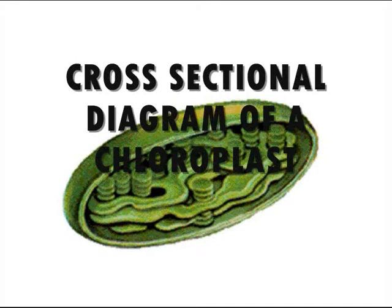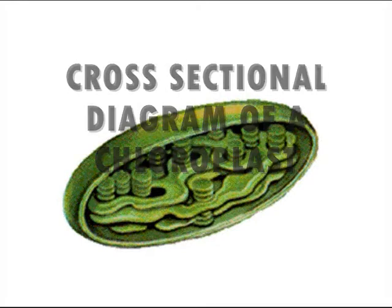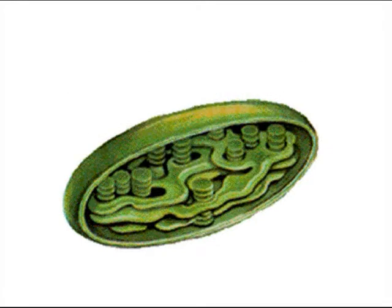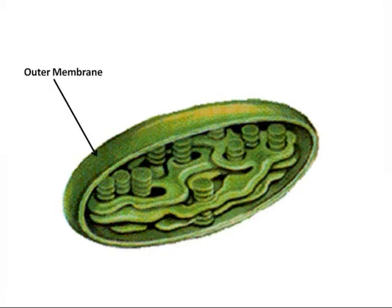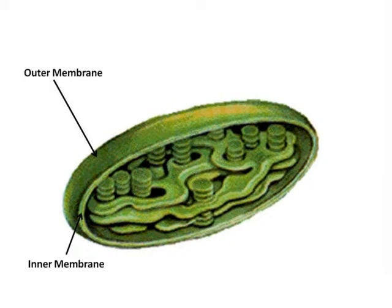What you are looking at now is a cross-sectional view of a chloroplast. We will briefly explore the main six parts of this vital structure. The first two parts are the outer membrane and the inner membrane. These are the parts of the chloroplast that protect the inside. The two membranes are folded together to create a stack of flattened discs, which act as a very good protective mechanism.